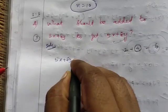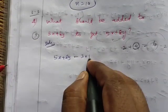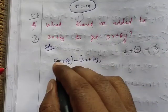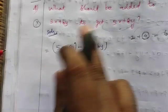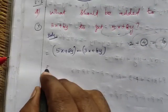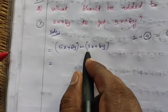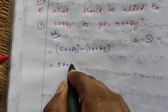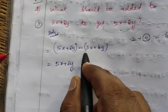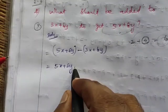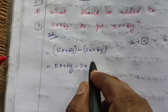The solution is: 5x plus 8y minus open bracket 3x plus 6y close bracket. When we have a minus before the bracket, we multiply by minus one. The minus sign goes to all terms. So 5x plus 8y minus 3x minus 6y.